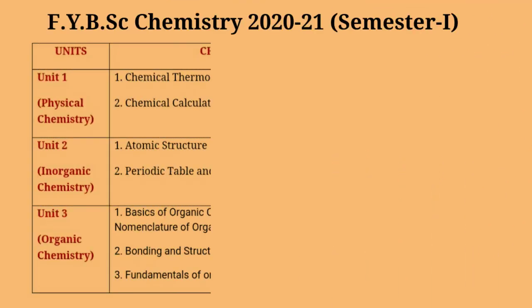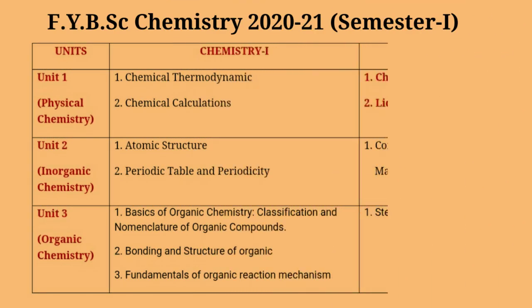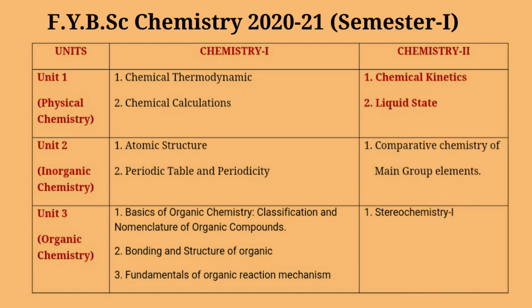At F.Y.B.Sc, we have two chemistry papers, Chemistry 1 and Chemistry 2. Each paper has three units: Unit 1, Unit 2, and Unit 3. Unit 1 is based on physical chemistry, Unit 2 is based on inorganic chemistry, and Unit 3 is based on organic chemistry. I shall teach Unit 1 of Chemistry paper 2, which comprises two chapters: Chemical Kinetics and Liquid State.